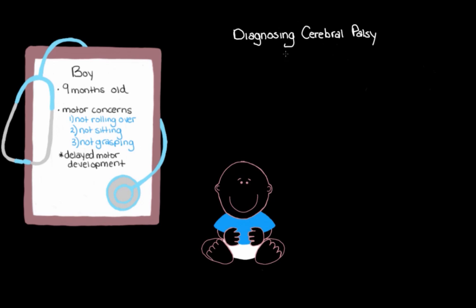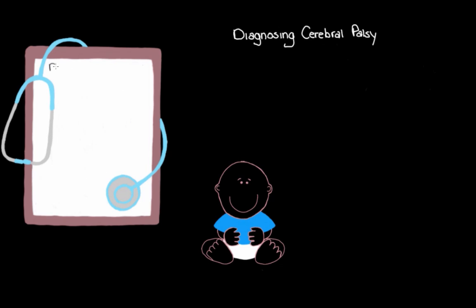Unfortunately, we don't have a specific test that can definitively diagnose cerebral palsy. Instead, we have to rely on asking the parents questions about the child's movements, doing physical exams on the child, and doing some imaging of the child's brain — often an MRI or an ultrasound — because they allow us to see any potential areas of damage the best.